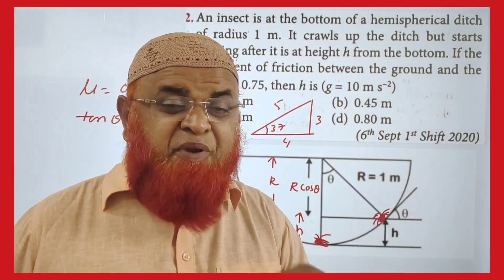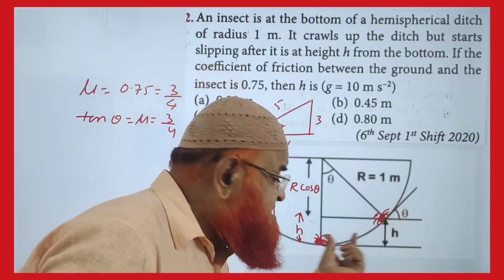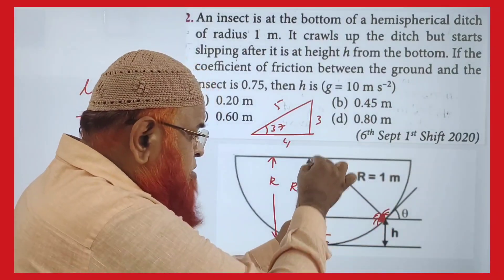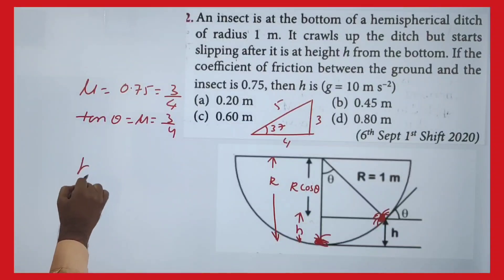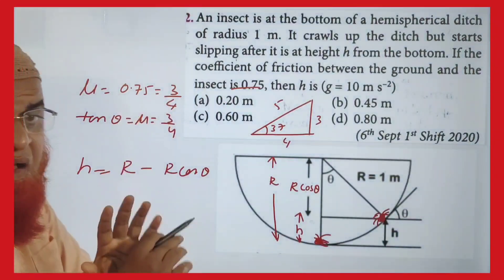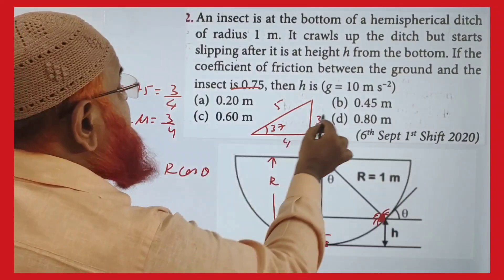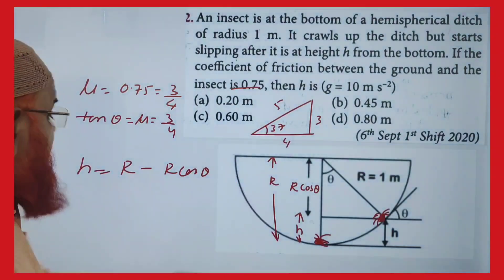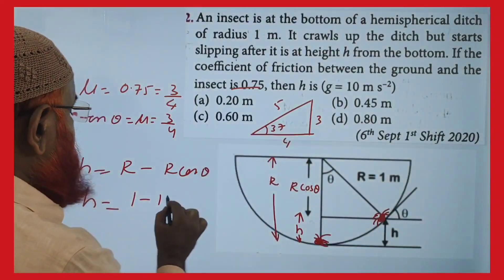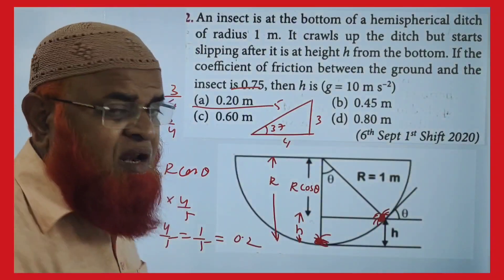This is a previous year JEE question in which there is a hemispherical bowl. An insect can crawl up to a certain height and then skates down. We have to find out that height. Radius of the bowl is R, and the component is R cos θ, so H = R minus R cos θ. Given μ = 0.75 = 3/4, and μ = tan θ, so the triangle gives hypotenuse 5. Height = 1 minus (4/5) = 1/5 = 0.2m.